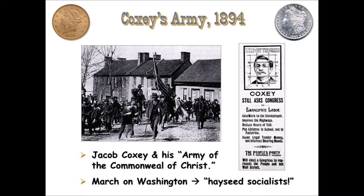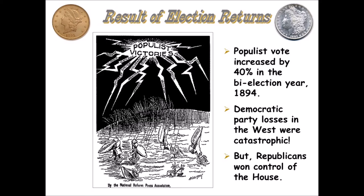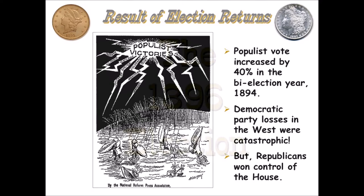In 1894, Jacob Coxey led what was called Coxey's Army — officially Coxey's Army of the Commonwealth of Christ — to Washington, D.C. Many of these men were veterans, but largely they were unemployed and homeless people marching on D.C. to demand assistance. Essentially they were demanding unemployment insurance in a time when that didn't exist. Coxey's Army was forced out of D.C. at gunpoint at times, and fire hoses were used on them. They were dismissed as 'hayseed socialists.'